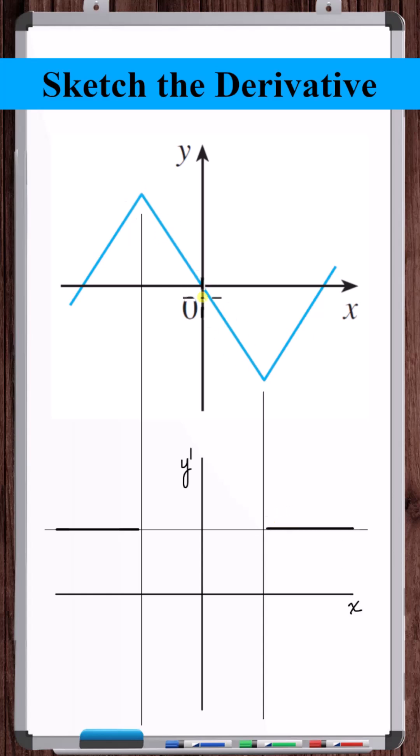In the middle, there's one continuous line with a negative slope. So on the derivative graph in the middle, there's a constant negative slope.